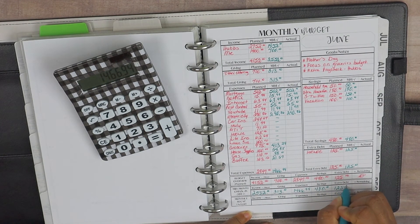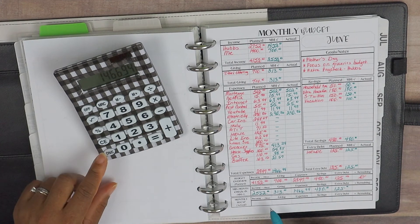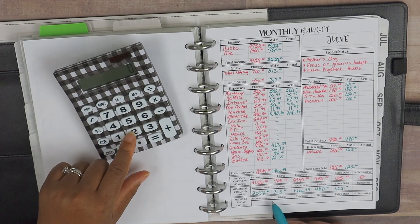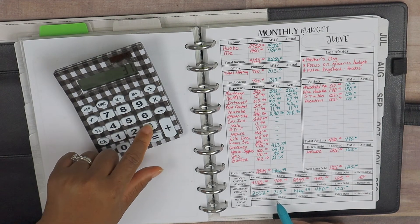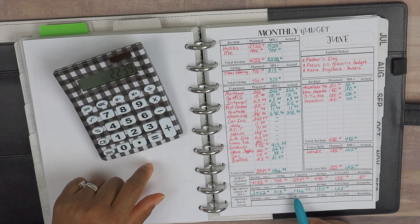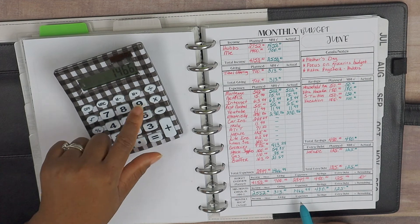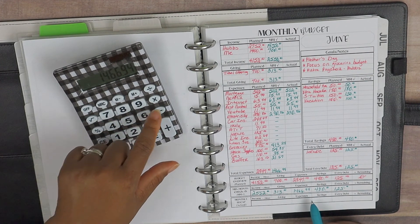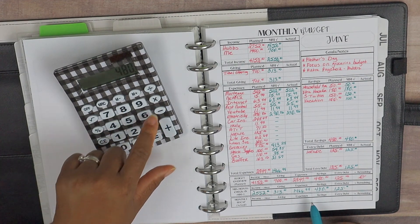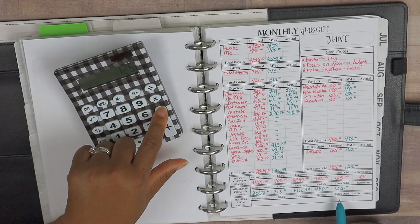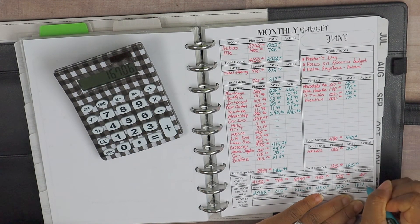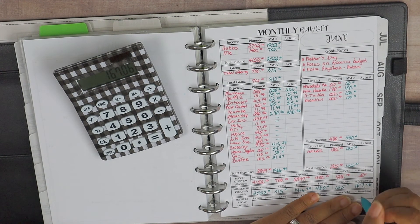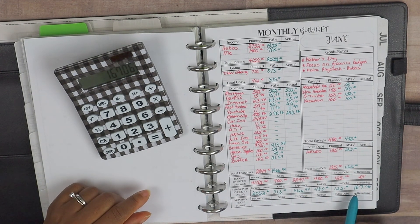So $2,552 minus $313, minus $1,466.94, minus $480, and minus $125. So that leaves us with $167.06 that we do have remaining at mid-month check-in.